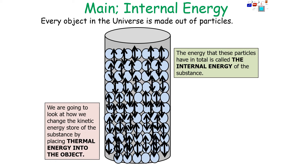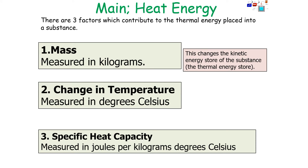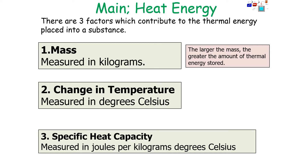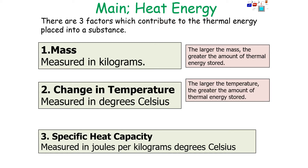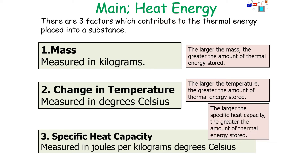In this topic, we're going to look at how we can change the kinetic energy store of the substance by placing thermal energy into or out of the object. There are three factors which contribute to the thermal energy placed into a substance: the mass of the substance in kilograms, the change in temperature in degrees Celsius, and the specific heat capacity in joules per kilogram degrees Celsius. The larger the mass, the greater the amount of thermal energy stored. The larger the temperature change, the greater the amount of thermal energy stored. And the larger the specific heat capacity, the greater the amount of thermal energy stored.